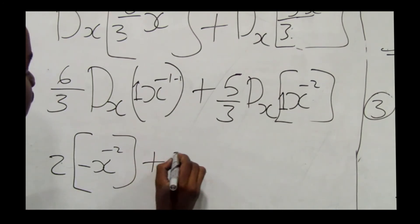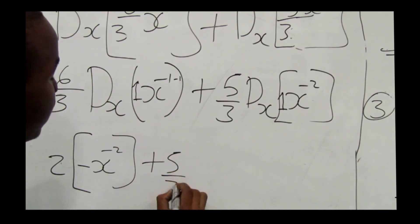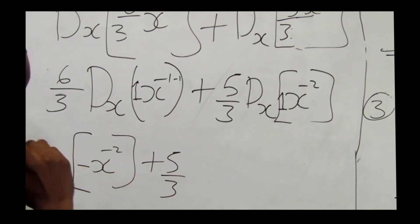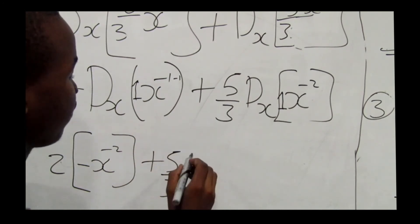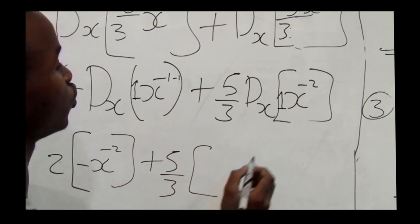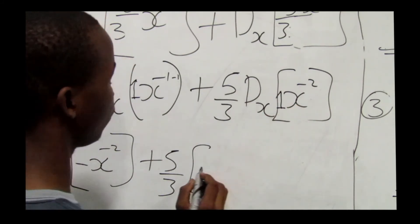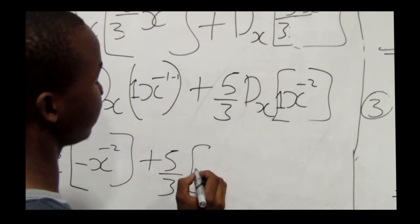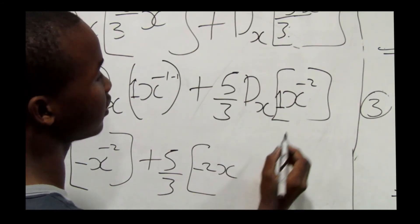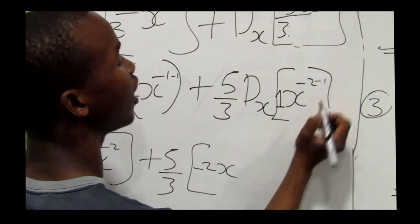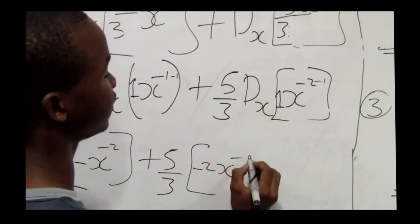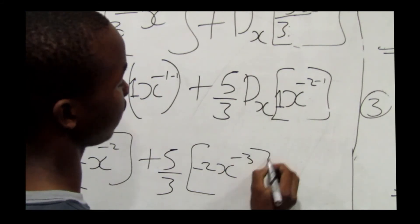Plus 5 over 3 times d/dx of x to the power negative 2: negative 2 times 1 is negative 2, so we get negative 2x to the power negative 3.